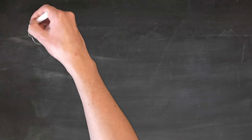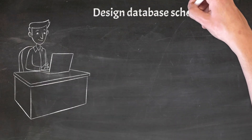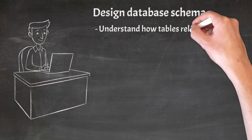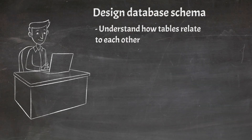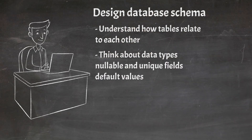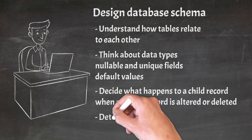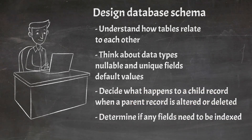When creating migrations, first design the database schema. Think through how your tables relate to each other. Think about data types, what values can or cannot be null, what values have to be unique. If you have relationships, think about what you would do to child records when a parent record is updated or deleted. Also think about what fields may need to be indexed. After figuring out all of the above, you can start creating migrations.